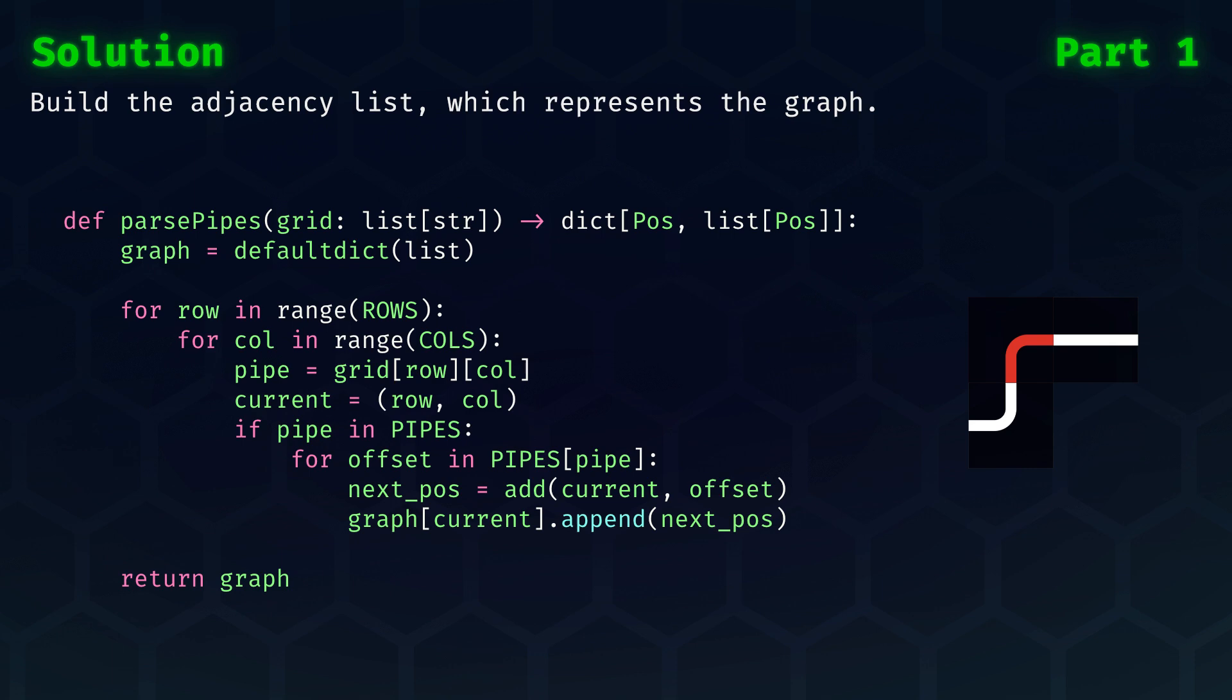We loop over the grid and get the symbol of our current position. If this is actually a pipe symbol, then we grab the two offsets from the previous dictionary, and we add the neighboring positions in the adjacency list for the current node. Finally, we have our graph.